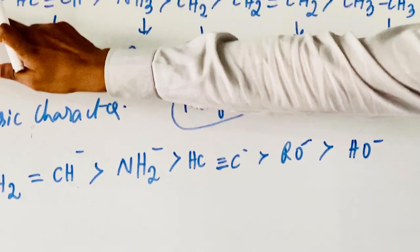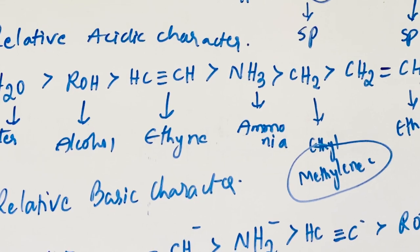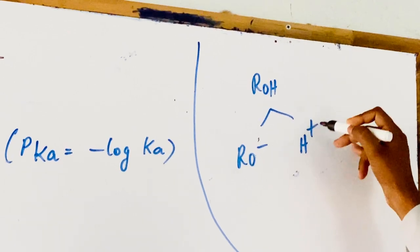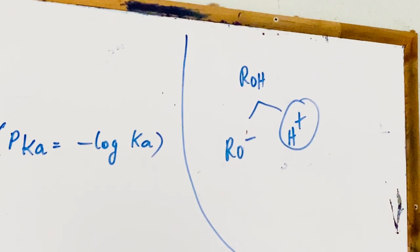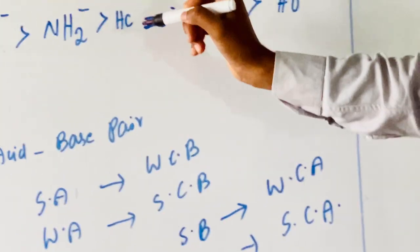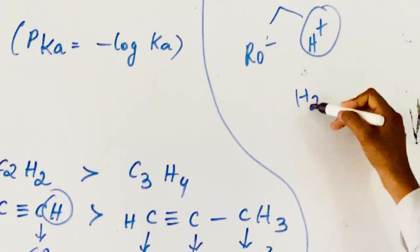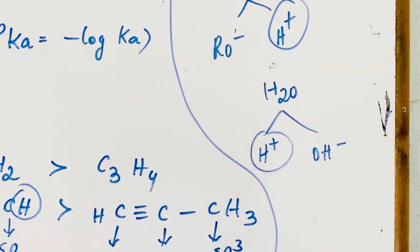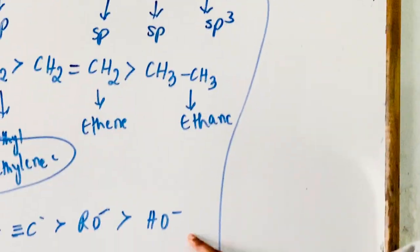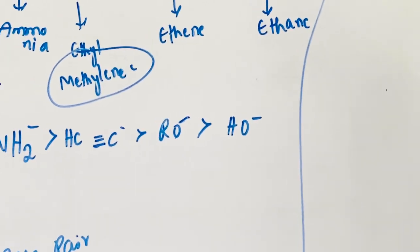After donation of one proton from alcohol, ROH ionizes into RO minus and H plus — nothing but donation of one proton — and it may form its conjugate base RO minus. Similarly, water also ionizes into H plus ion and OH minus ion; after removing a proton it may form the hydroxyl ion OH minus.